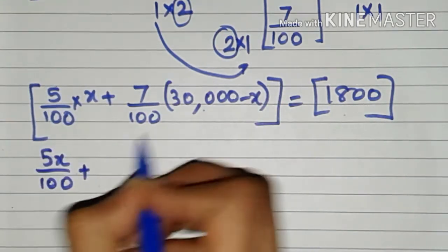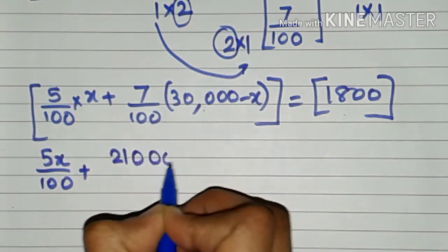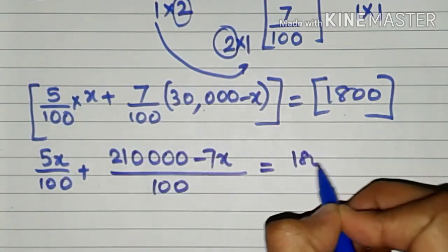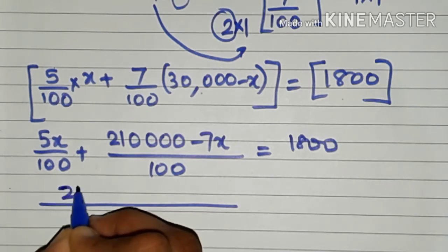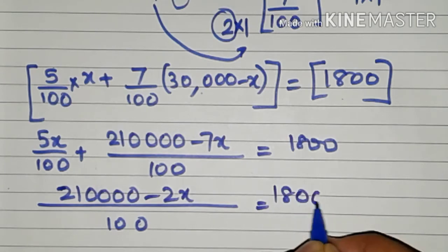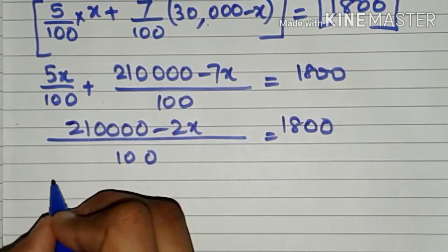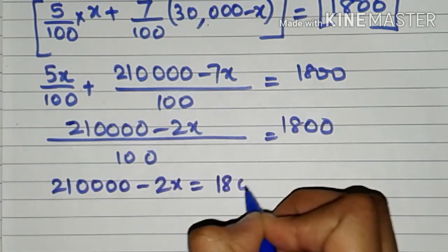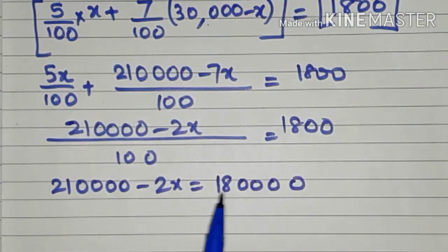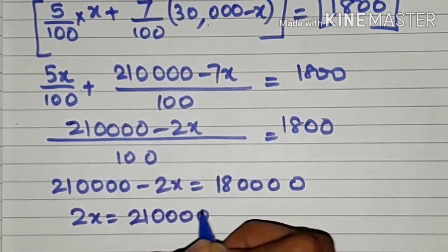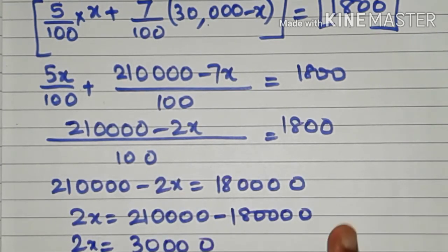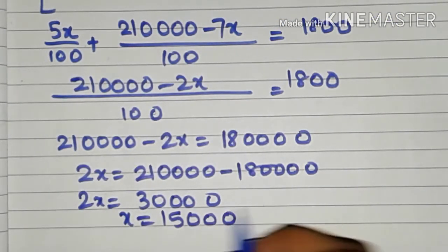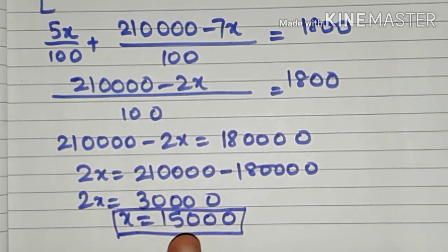We get 5x/100 plus, opening the brackets, 2,10,000/100 minus 7x/100, equal to 1800. Taking 100 common, 5x minus 7x gives minus 2x. So we have minus 2x equal to 1800. Bringing 100 to the other side, we get minus 2x equal to 1,80,000 — that is 18 followed by four zeros. Shifting terms, 2x equals 30,000, which means x equals 15,000.